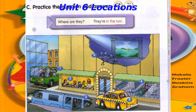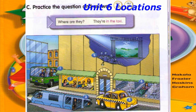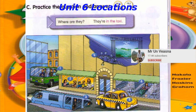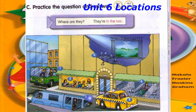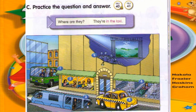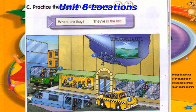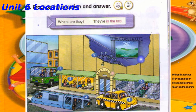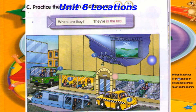Track 41. C. Practice the question and answer. Number 1: Where are they? They're on the bus. Number 2: Where are they? They're in the restaurant. Number 3: Where are they? They're on the train. Number 4: Where are they? They're at the movies.